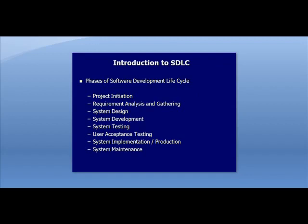Now let's take a look at the different phases of the software development life cycle. The first phase is project initiation, followed by requirement analysis and gathering, system design, system development, system testing, user acceptance testing, system implementation or production, and finally system maintenance.